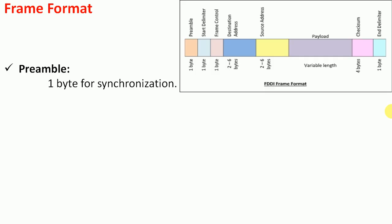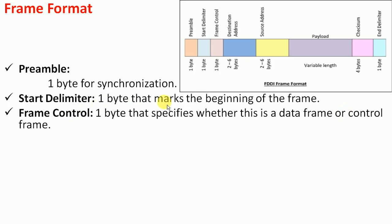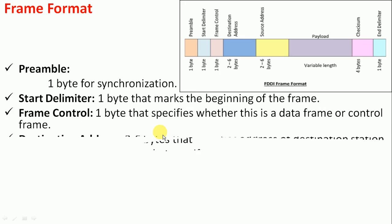The start delimiter is one byte that marks the beginning of the frame, telling the receiver where the frame starts. The frame control field is one byte that specifies whether this is a data frame — meaning data is being transferred — or a control frame, where a script or code is passed to perform a specific task.